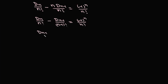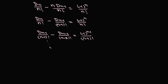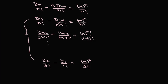Similarly, D(n-1)/(n-1)! - D(n-2)/(n-2)! = (-1)^(n-1)/(n-1)!, and the pattern continues down to D(2)/2! - D(1)/1! = (-1)^2/2!. Adding all these telescoping equations, all intermediate terms cancel and since D(1) = 0, we get D(n)/n! on the left side.